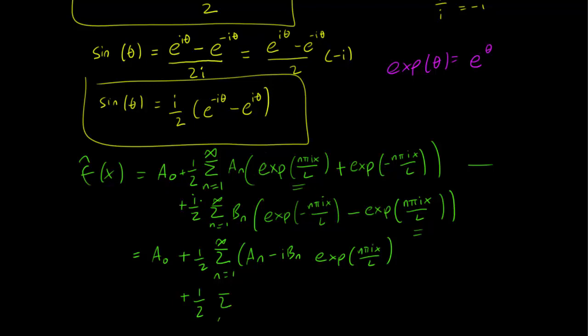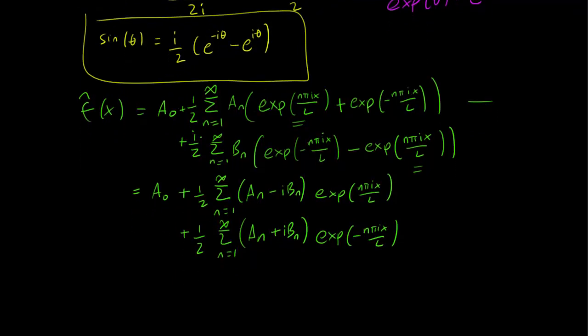And similarly, we get a 1/2 sum from n=1 to infinity. When we are concerned about the negative exponentials, we have an aₙ from the first sum, but a positive ibₙ from the second sum. In fact, we can simplify things a little bit more. We can write f̂(x) equals just the sum from n going from -∞ to ∞ of exp(nπix/L) with this number Cₙ constant instead.